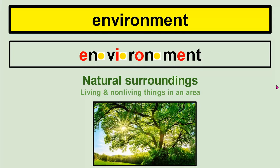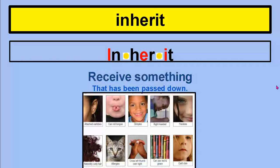Environment — our natural surroundings; it's all the living and non-living things in an area. Inherit — when we receive something that has been passed down, such as attached earlobes. Can you roll your tongue? Dimples? Being right-handed or left-handed? Having freckles or not? Naturally curly hair, allergies, the way you clasp your hands, whether you can see red and green, a smooth chin or a cleft chin — these are examples of traits we have inherited from our parents.